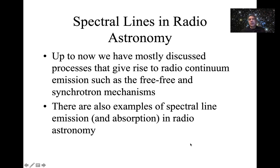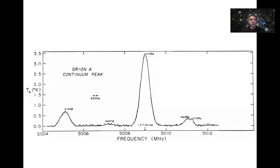Up until now we've mostly discussed continuum processes, such as free-free emission and thermal processes from photo-ionized nebulae like HII regions and planetary nebulae, and also non-thermal continuum emission — the synchrotron process from radio jets from active galactic nuclei. But nearly all types of sources also generate spectral lines, usually as emission lines from diffuse extended gas, though sometimes those same lines can be seen in absorption against the background of a strong continuum.